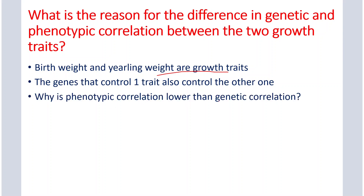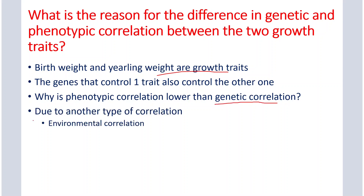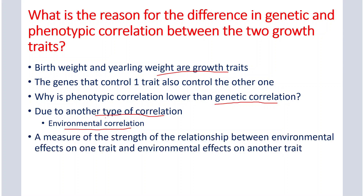But why is phenotypic correlation lower than the genetic correlation? The genetic correlation and the phenotypic correlation are different for these two growth traits because there is another type of correlation — known as environmental correlation. This environmental correlation is the cause of the difference between the genetic correlation and the phenotypic correlation between two quantitative traits. Environmental correlation can be defined as a measure of the strength of the relationship between environmental effects on one trait and environmental effects on the other trait.